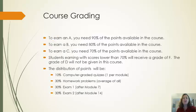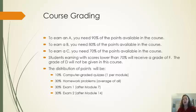For course grading: 90% of the points available earns an A, 80% a B, 70% a C. I am not going to give a D grade in this course — we need you to get a C or better. So if you earn less than 70%, you will receive a grade of F. The points are distributed as follows: 10% for computer-graded quizzes, 30% for homework problems, 30% for the Module 7 exam, and 30% for the Module 14 exam. Those exams are cumulative over each half of the course.